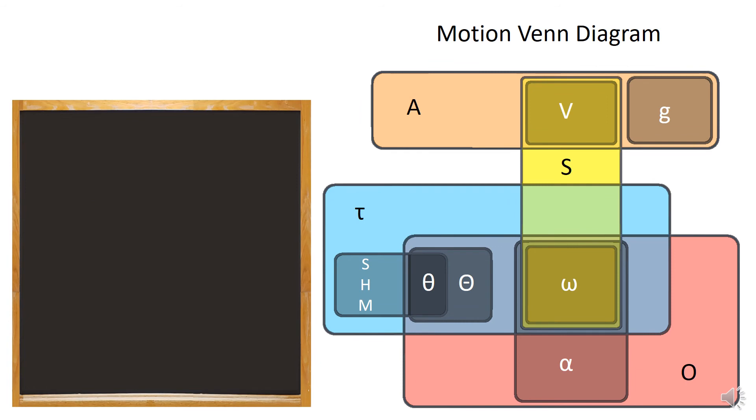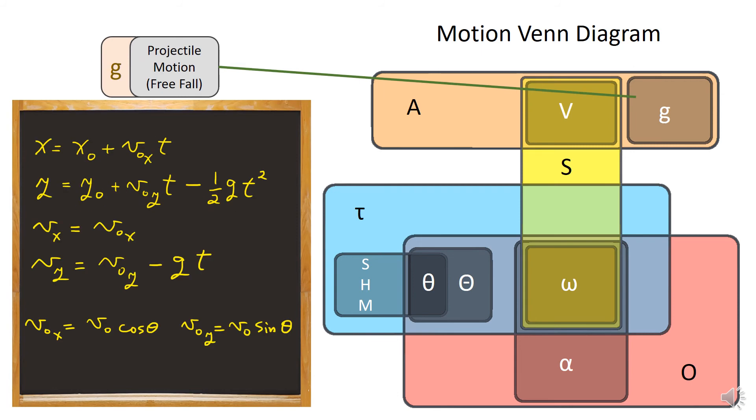Now I put the rest of the motions in the Venn diagram to complete the figure. We have constant velocity motion, which is a special case of motion with a constant acceleration. We just have the acceleration of zero. Another example of motion with a constant acceleration is freefall or projectile motion. With the y-axis directed up and x horizontal, the acceleration has a y component of minus g and no x component. And we get these equations.